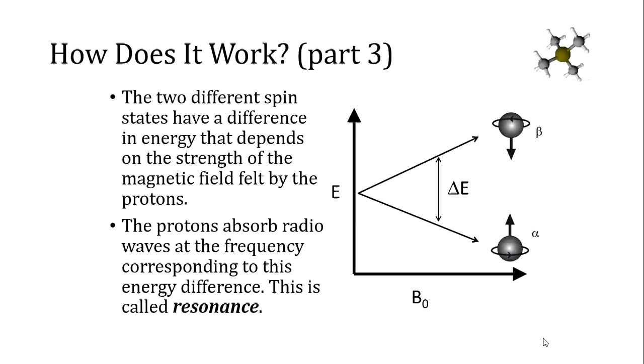Those two states have different energies. The spin aligned state, sometimes called alpha, is usually lower in energy than the spin opposed state, usually called beta. There's a difference in energy that can be measured.